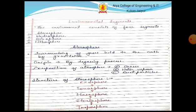First, we discuss about the environmental segments. The environment consists of four segments: first, atmosphere; second, hydrosphere; third, biosphere; and fourth, lithosphere.